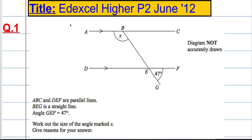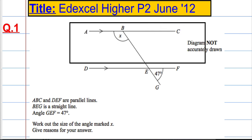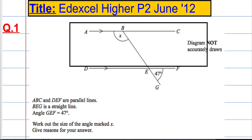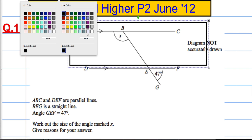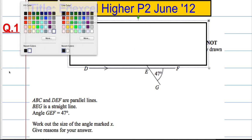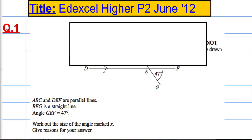Another tip I often give is to cover up various parts of the diagram just to make things a bit clearer. So suppose I was to cover all of this part — now I can see I've got a straight line here and that's 47 degrees.